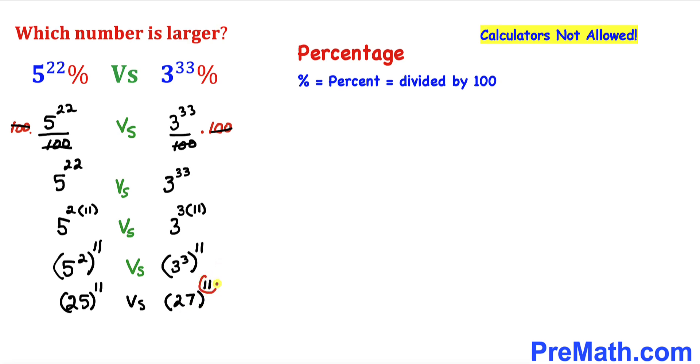Now we can see both sides have the same exponents. Let's focus on the bases: 27 is larger than 25. Therefore, 27 to the power of 11 is going to be larger than 25 to the power of 11.